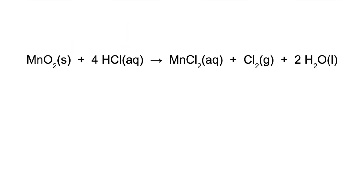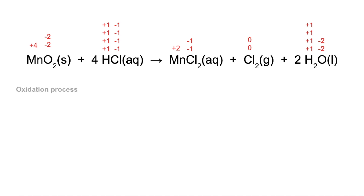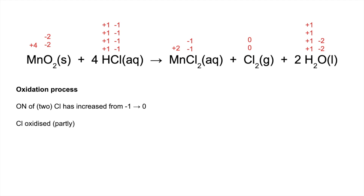Here's another example — same approach: oxidation number first, then electrons. All the oxidation states are shown, and we can see that manganese and chlorine have both changed. For the oxidation process, two of those chlorines — out of the four chlorines in four moles of HCl, each at minus one — have gone up to zero. The oxidation number of two of the chlorines has increased from minus one to zero, so chlorine is oxidized. The total increase in oxidation number is two.